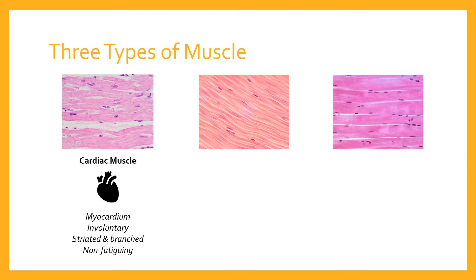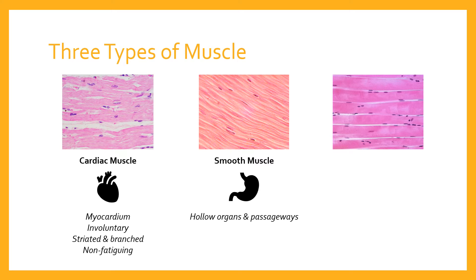The second kind of muscle is smooth muscle. Smooth muscle is mainly found in the hollow organs and passageways of the body — for example, the digestive tract and bowel, arteries and veins, and the bladder as a good example of a hollow organ. These hollow organs and passageways are predominantly made up of smooth muscle.